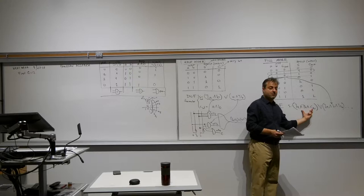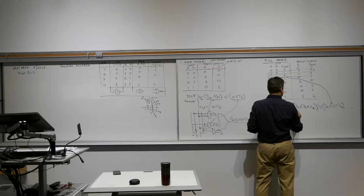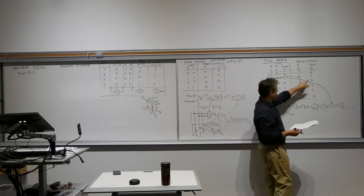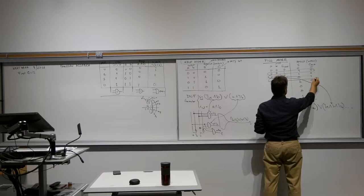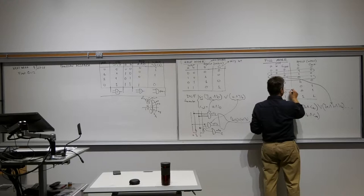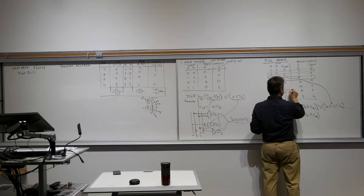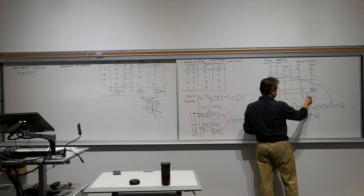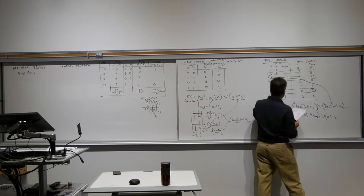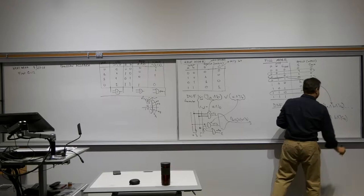For the carry out, I do the same — look for where the ones are. That's NOT A AND B AND C_in for one row. Selecting another: A AND B AND NOT C_in. This is the easy way to construct those things because it's very visual — whatever you see in the input where you have a one, you just write that down.